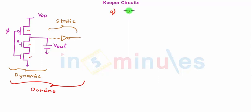First, let's presume phi was equal to 0. That means, and let's call this node as X, that means my output was pre-charged to VDD. That means X was equal to VDD.